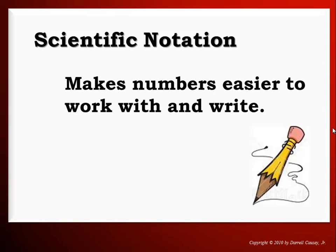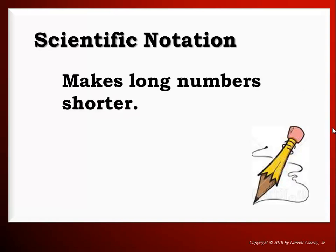Scientific notation allows us to make numbers easier to work with and easier to write by helping us make long numbers shorter. If we have a number with a lot of zeros in front or behind, or numbers that aren't significant, we can shorten it and make it easier to write. We don't change the value, we just shorten it by writing it in a way that uses the powers of 10.